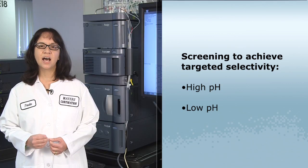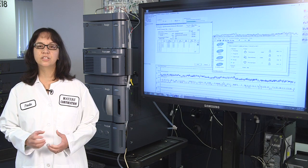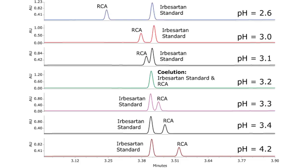However, it's uncommon to test small incremental changes in pH as a routine tool in methods development. In this example, which is based on a USP method, you can see the dramatic changes that can occur with small modifications of pH. Elution order can change over a range of just three-tenths of a pH unit.